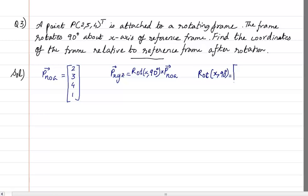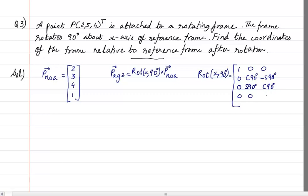The 4x4 rotation matrix about x has: first row [1, 0, 0, 0], then [0, cos(90°), -sin(90°), 0], then [0, sin(90°), cos(90°), 0], and finally [0, 0, 0, 1] as the scaling factor row. Since there is no translatory motion, the translation components are all zero.